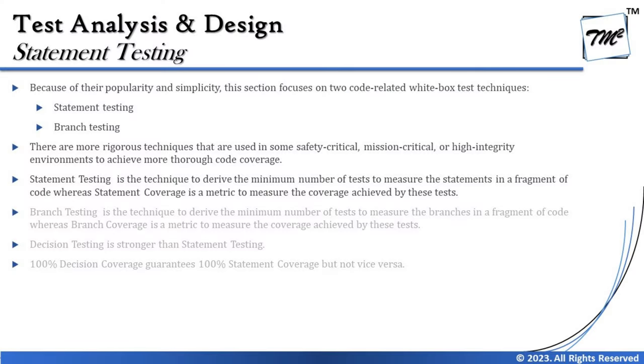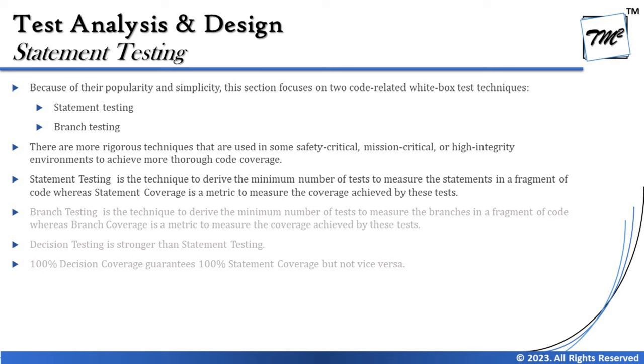The syllabus says that because of their popularity and simplicity, this section focuses on two code-related white box test techniques. There are many others we will learn at the advanced level, but at foundation level the most commonly used are statement testing and branch testing. There are also more rigorous techniques used in safety-critical, mission-critical, or high-integrity environments to achieve more thorough code coverage. Today we cover only statement testing; branch testing will be covered in the next tutorial.